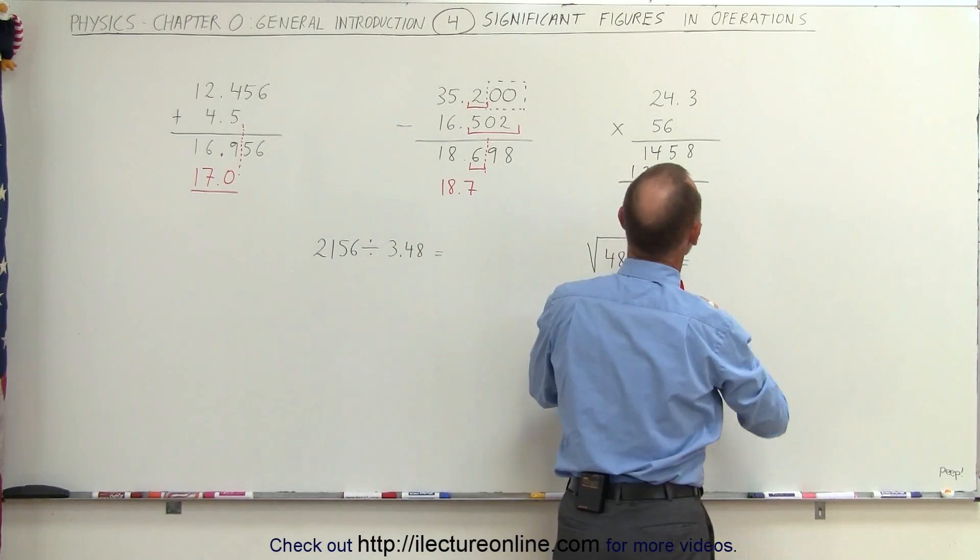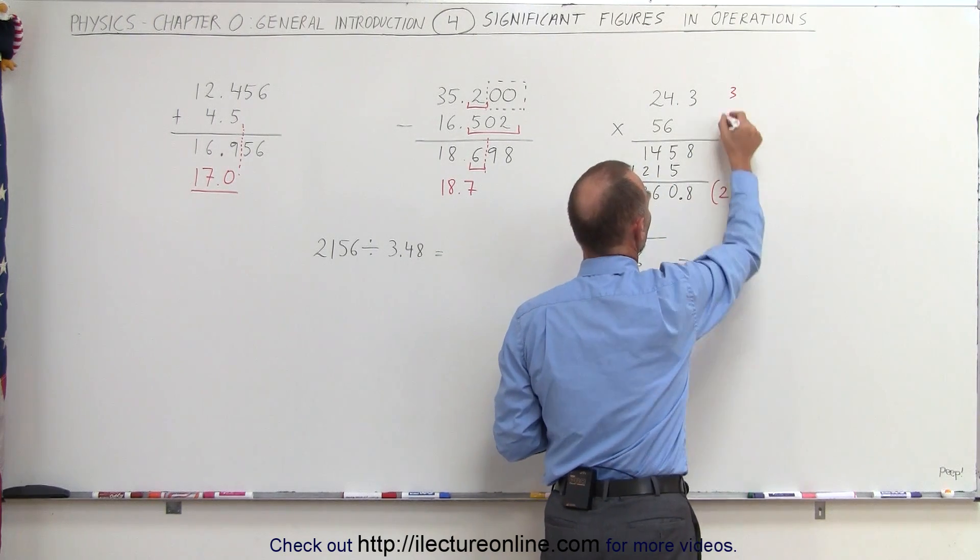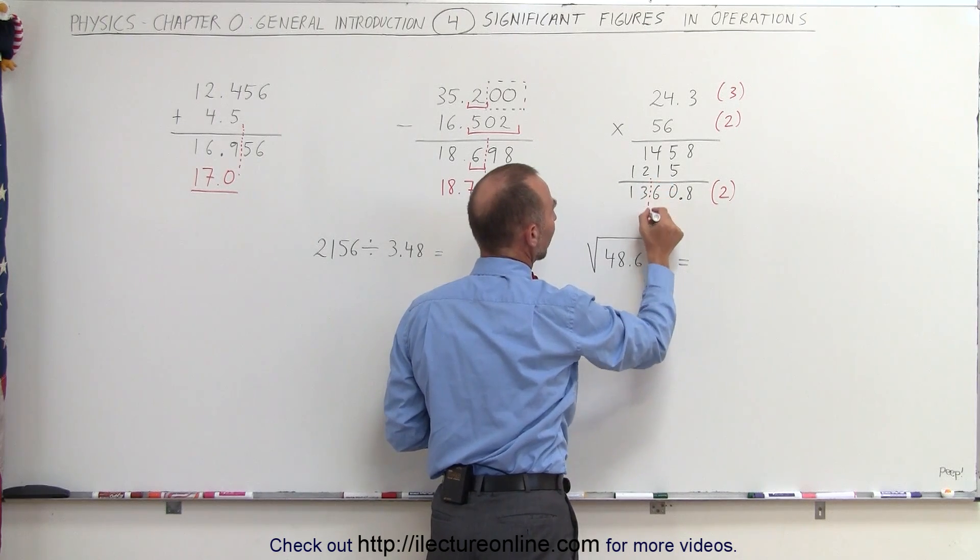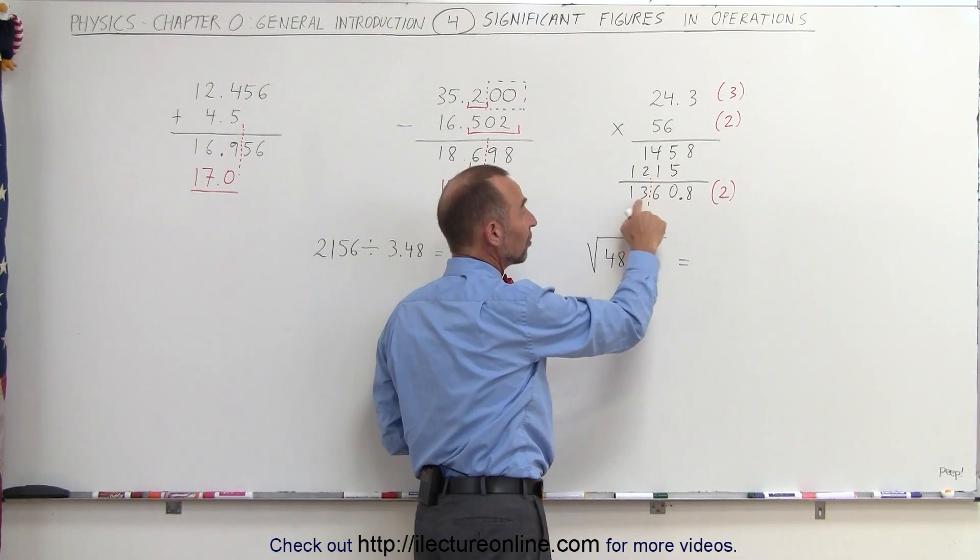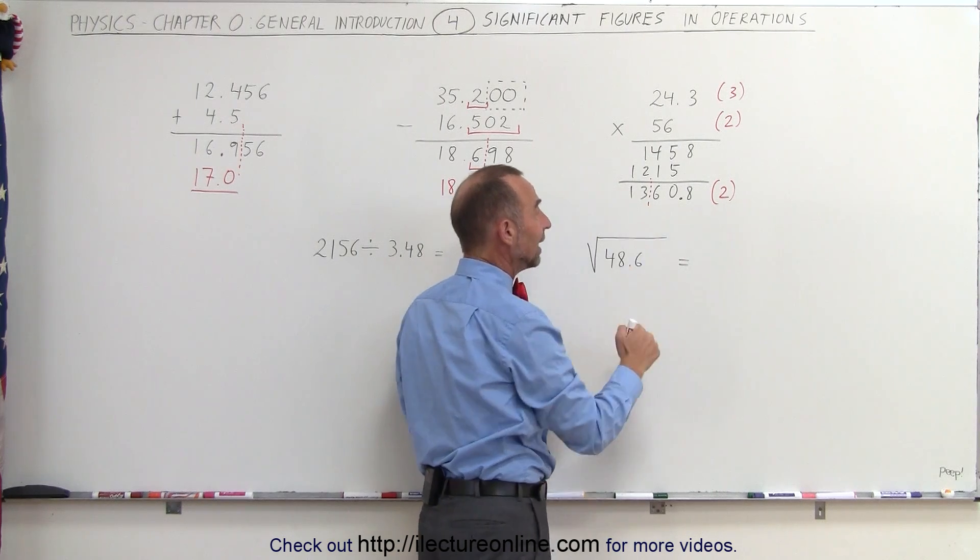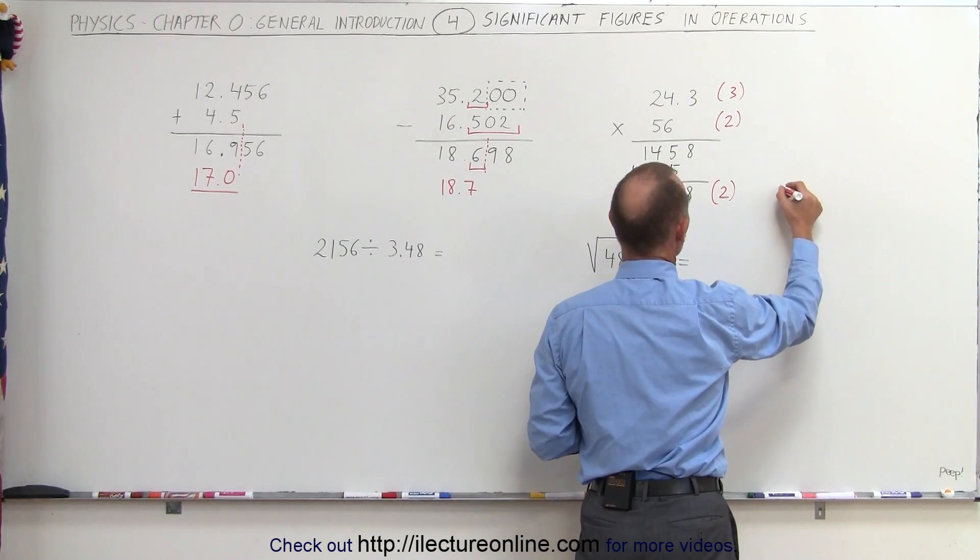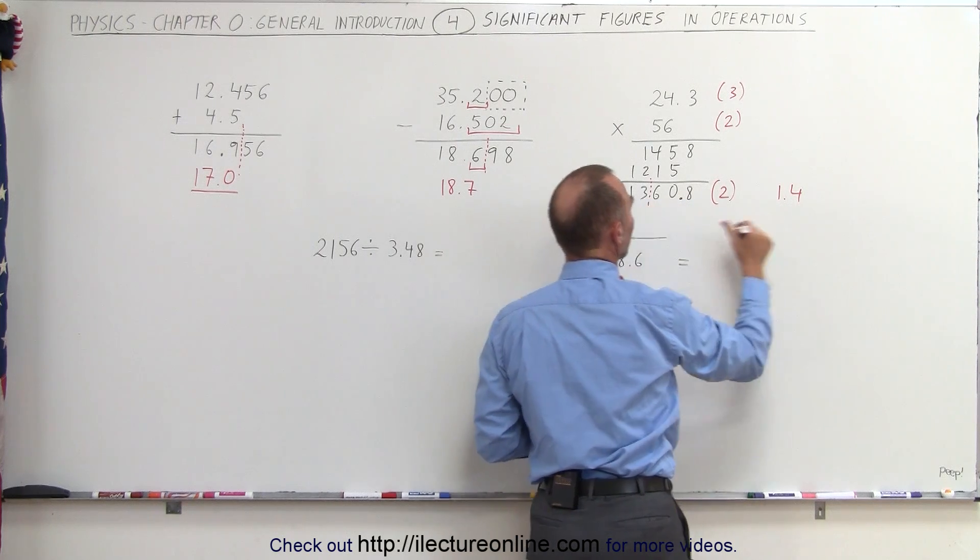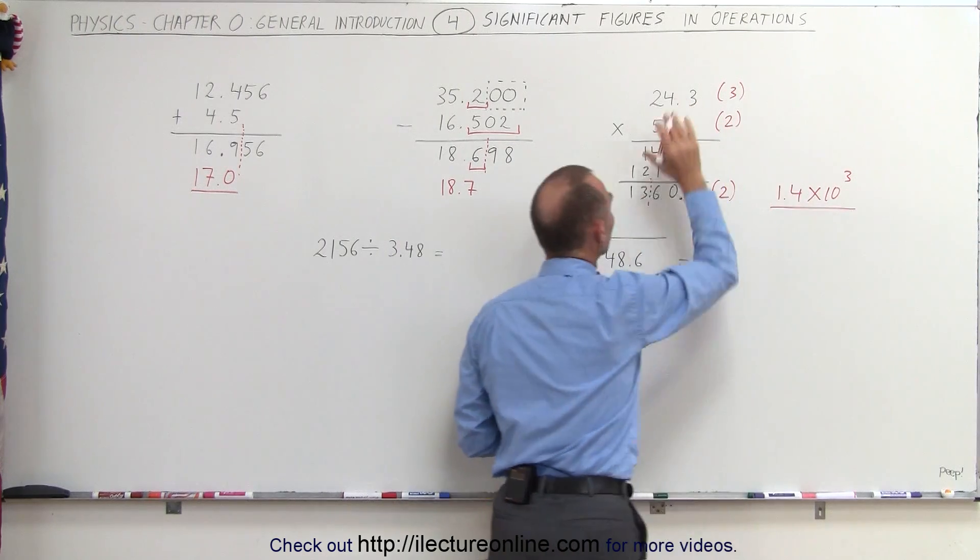And now we have to reduce that to the correct number of significant figures. Notice we have three significant figures here. We have two significant figures there. That means we need two significant figures there. This is just the number of significant figures, which means we have to cut it off right here. Notice we will have to round this number up because this is 13 and a 6 behind it. So the proper number is 14. And instead of writing it like 1400, we're going to use what we call scientific notation. So this becomes 1.4. And we have decimal places, 1, 2, 3. That would be times 10 to the third. That would be the proper answer for this particular multiplication.